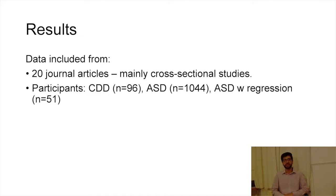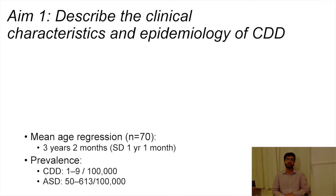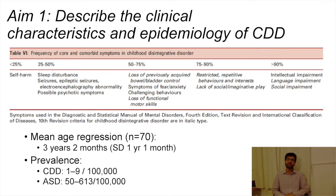Twenty journal articles met our criteria. We included 96 participants with CDD, making this the largest review of CDD literature. The overall level of evidence on CDD was low, and most articles were cross-sectional in nature. We found the mean age of regression in CDD to be three years and two months, with a range of two to seven years. We confirmed that CDD was indeed a rare disorder, and social communication skill deficits were seen in a majority of patients.